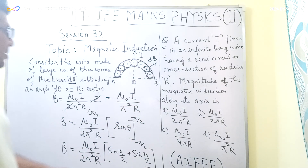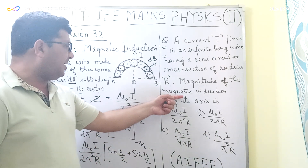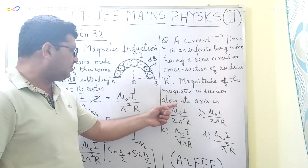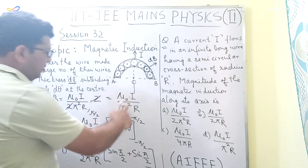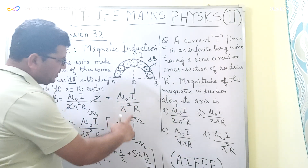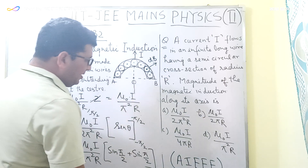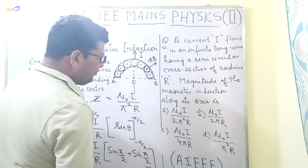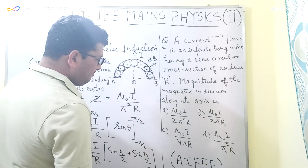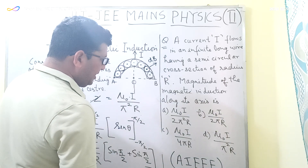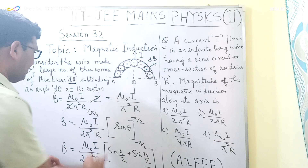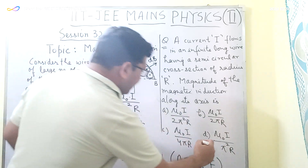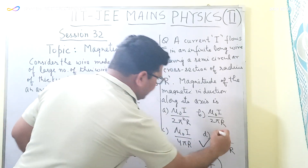So the magnitude of the magnetic induction along the axis is equal to μ₀I/(π²R). The correct option here is D.